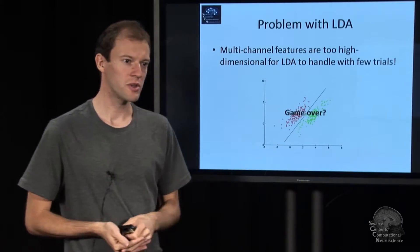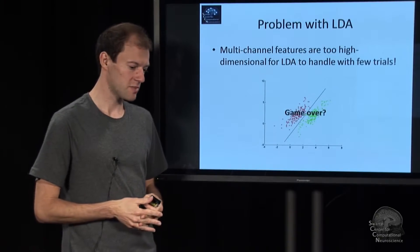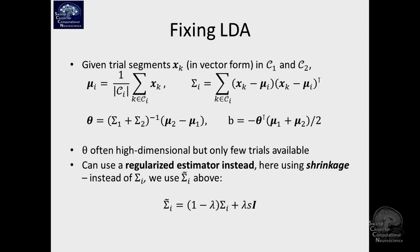because it needs to estimate that squared number of parameters for the covariance matrices. So we might be stuck here. However, it turns out that there is a way to fix that problem. There's a way to fix LDA so that it's able to deal with basically degenerate covariance matrices.